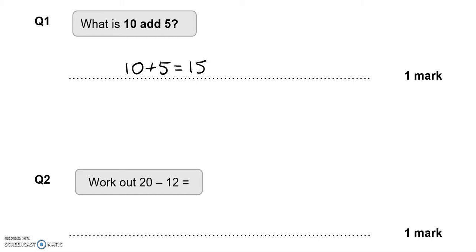Work out 20 take away 12. If you go backwards 12 steps from 20, you are going to end up with 8.